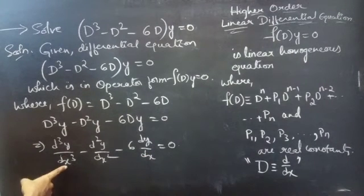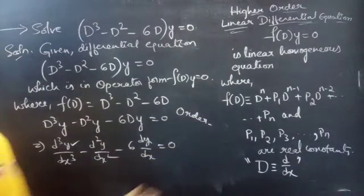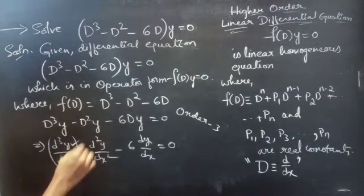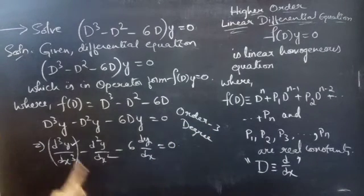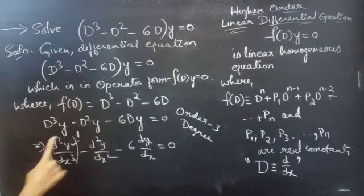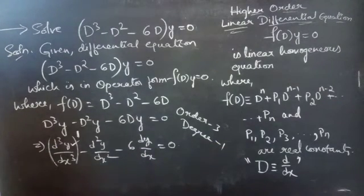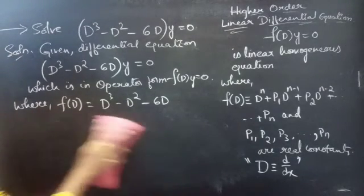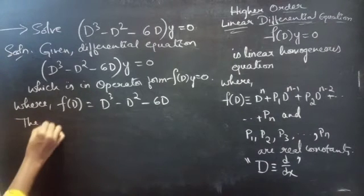Here d-cubed y by dx-cubed is our highest derivative, so the order of the given equation is 3. The degree of the given equation is the power of the highest derivative. Now we will find the general solution to the given equation using the auxiliary equation.